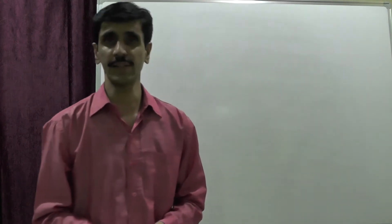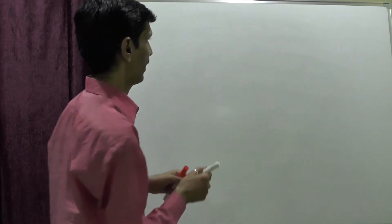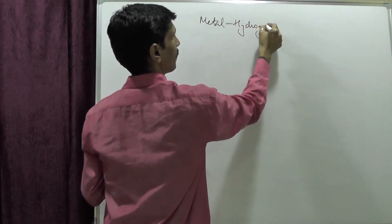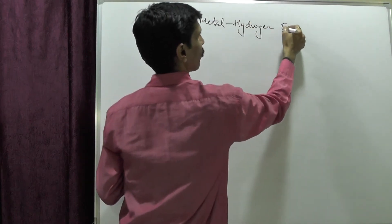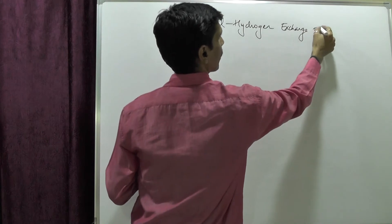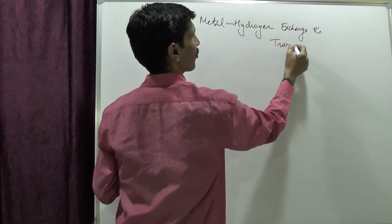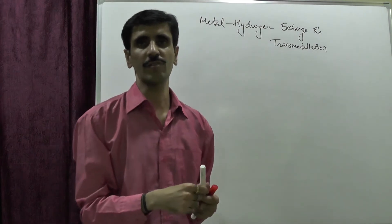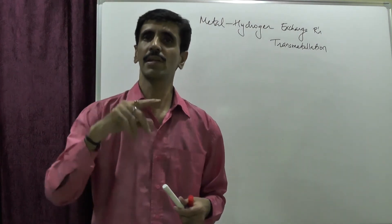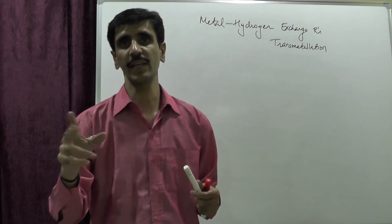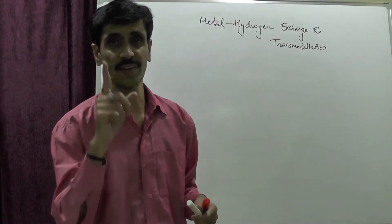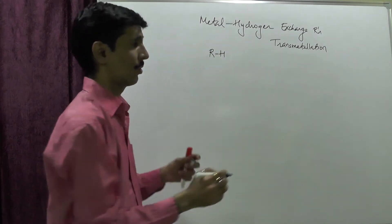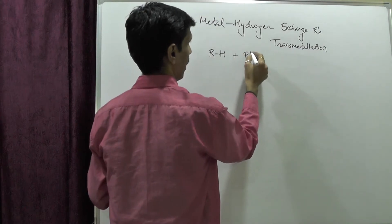In this video we go into the fourth method of preparation, and that is metal-hydrogen exchange reaction. We also call this as transmethylation reaction. For the general reaction, we take RH, an organic compound, and treat it with R'M, which is our organometallic compound.